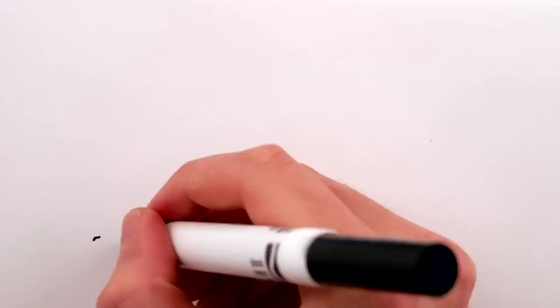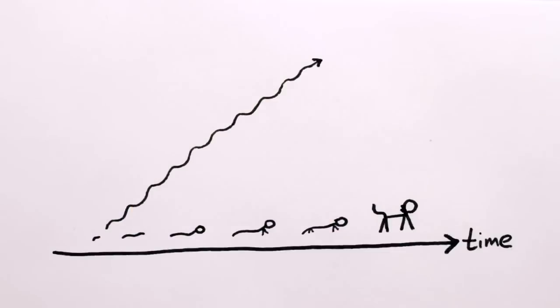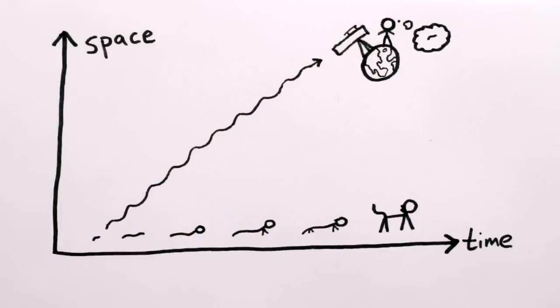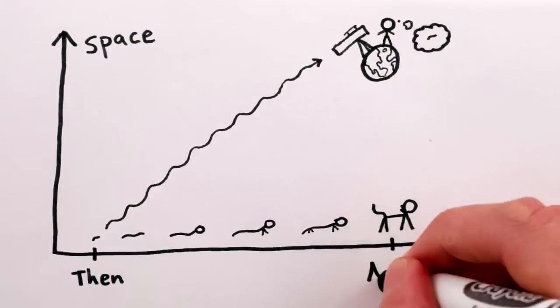But wait. It's better than that. Since light takes time to travel across the universe, when we point our telescopes at something really far away, we're actually seeing that part of the universe as it was when the light was emitted.